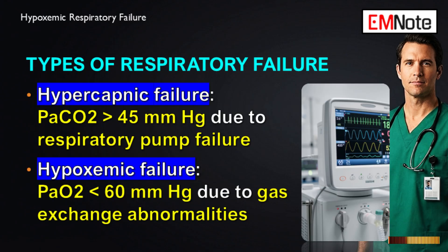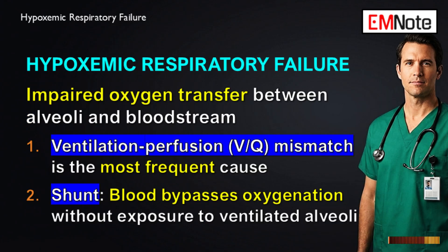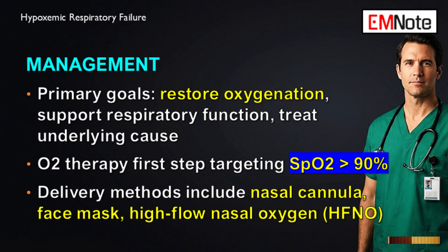To summarize: hypoxemic respiratory failure is defined by a PaO2 less than 60 mmHg, with five mechanisms — VQ mismatch and shunt being the main players. Once you've identified the failure, you have three immediate management goals: first, restore adequate oxygenation; second, support respiratory function by reducing the work of breathing; and third, start treating the underlying cause immediately.